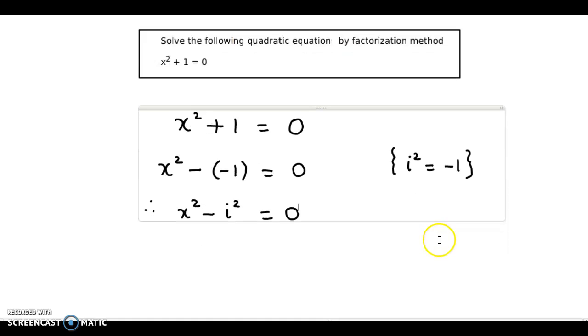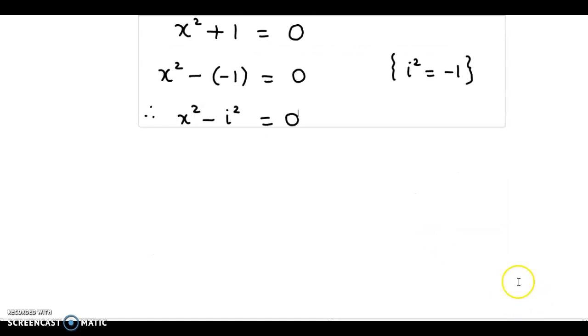And now we could apply the formula a square minus b square and we have our factors. So, this would be x plus iota into x minus iota is equal to 0.